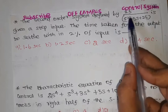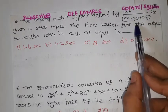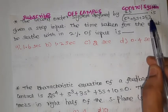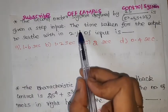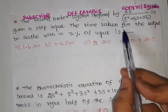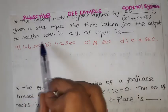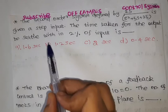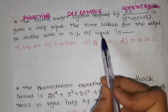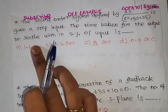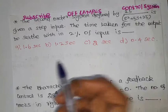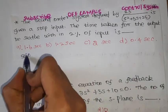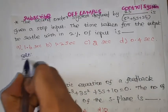Let's start the video. The second-order system defined by the transfer function 25 divided by s² plus 5s plus 25 is given a step input. The time taken for the output to settle within 2% of the input is what we are going to find out — the settling time for the given transfer function.